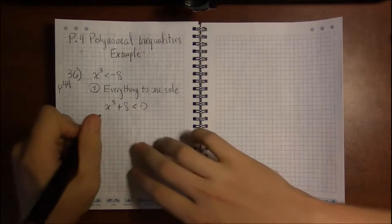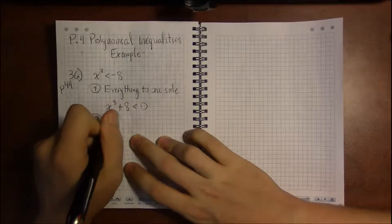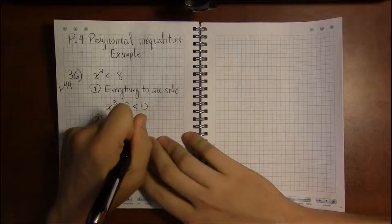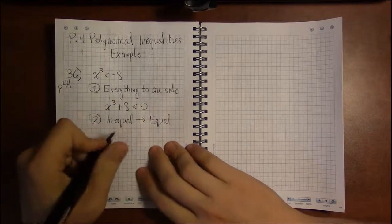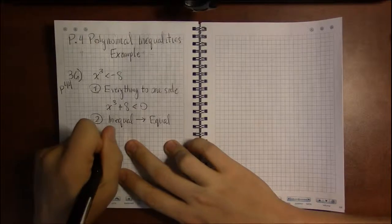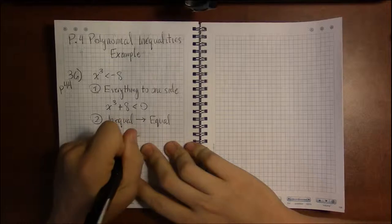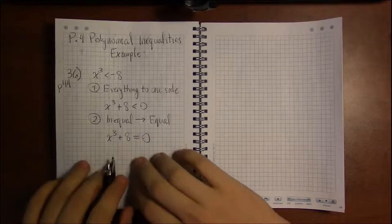Next step is we change our inequality, our less than in this case, into an equality. We change it into an equal sign. We now write this as x cubed plus 8, not less than, but equals 0.